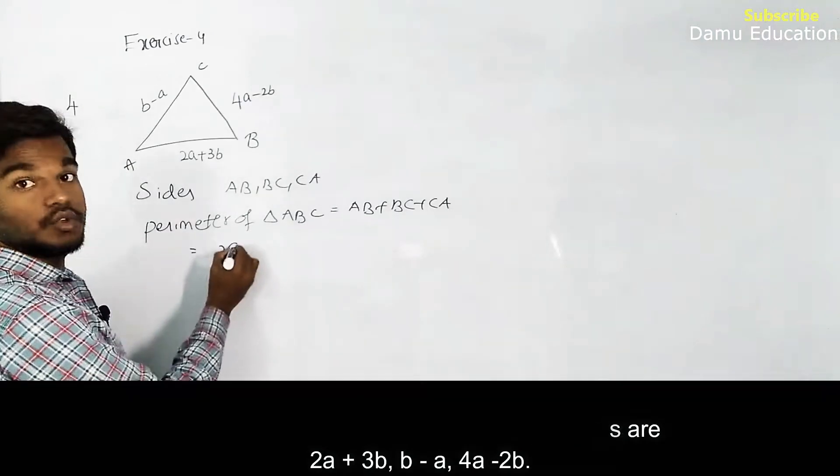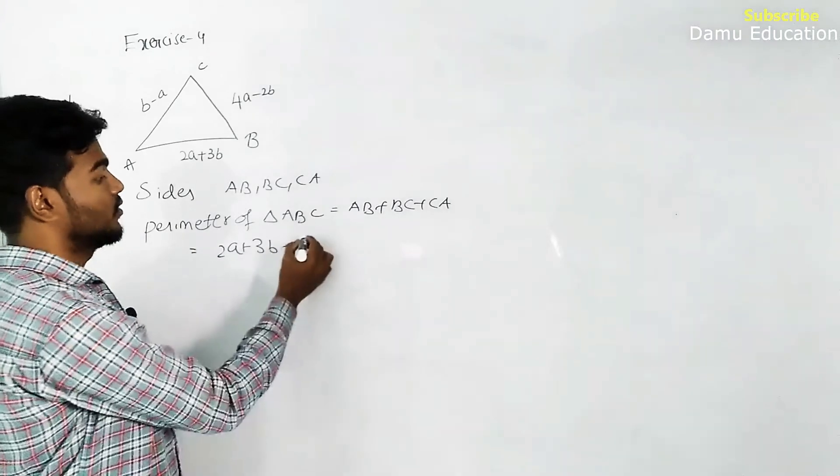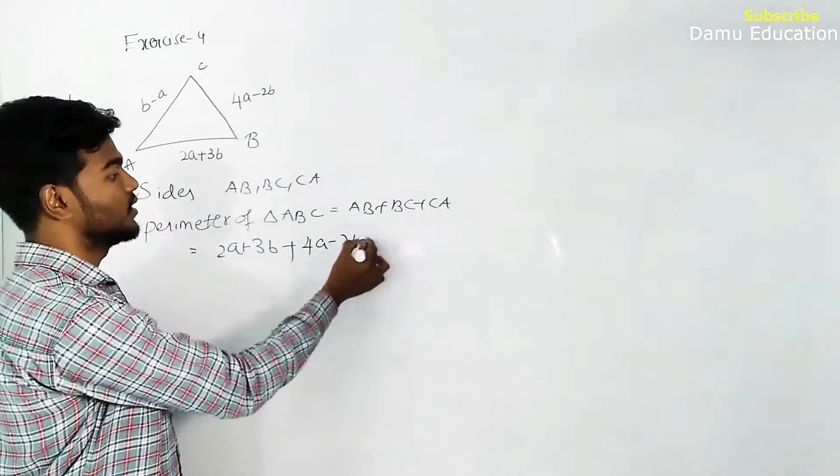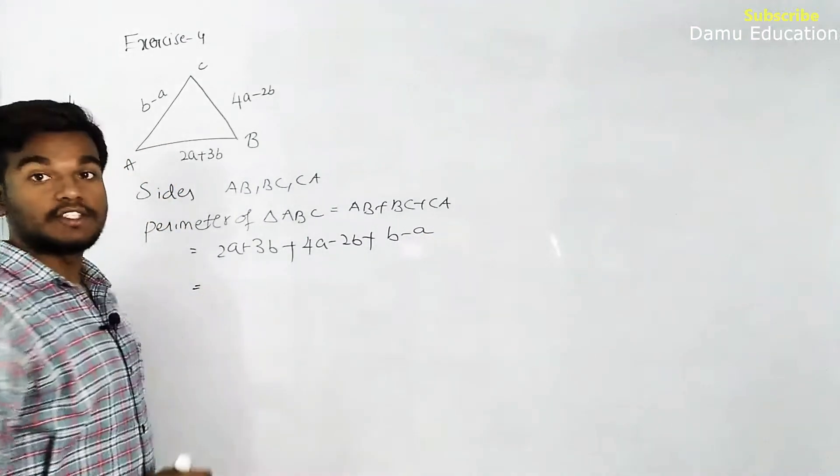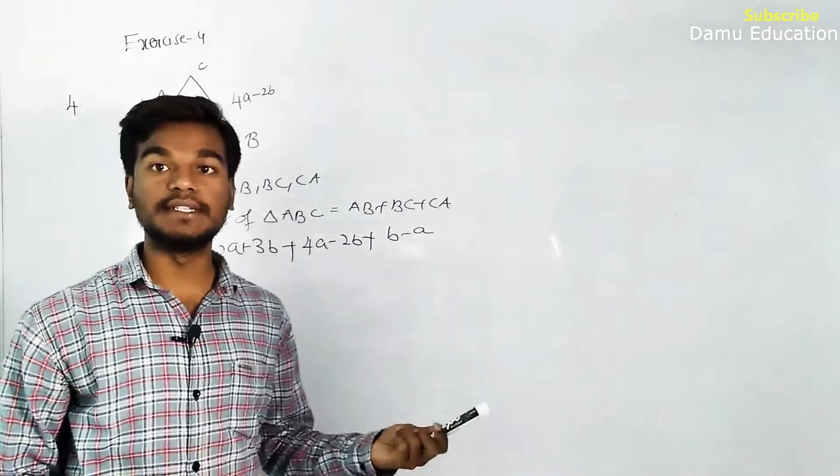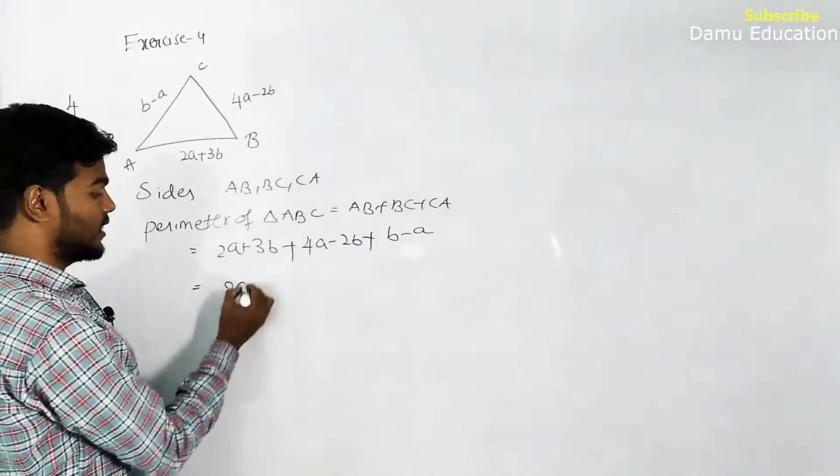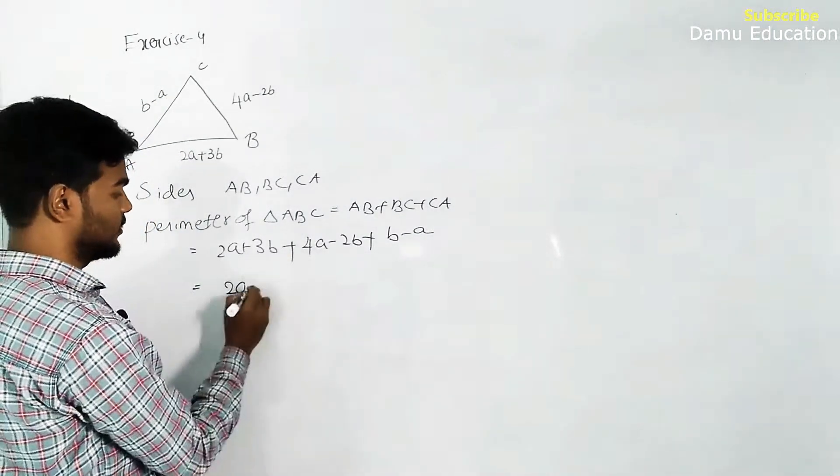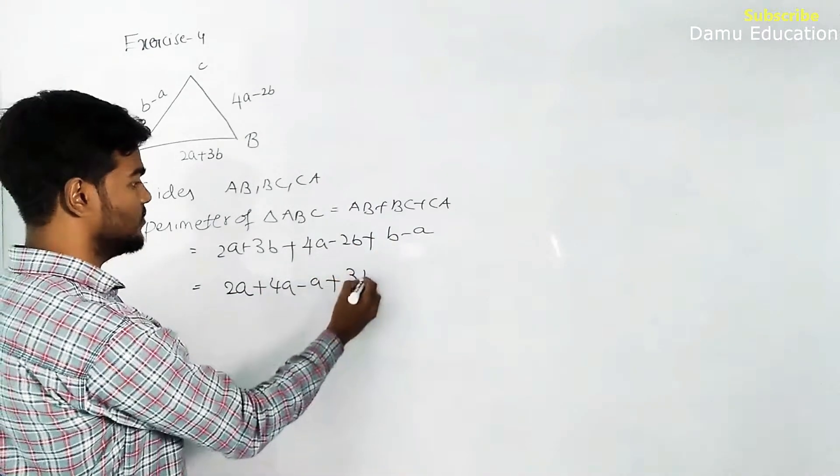AB is 2a plus 3b, BC is 4a minus 2b, and CA is b. As I told you have to write all the variables at the same place which are like terms. So 2a is there, any a terms? Yes, 4a minus a, plus 3b minus 2b plus b.